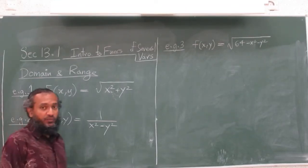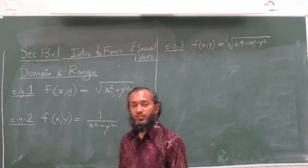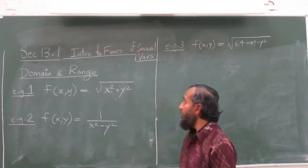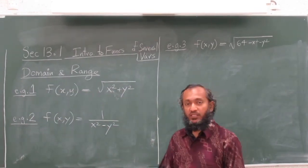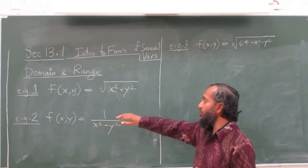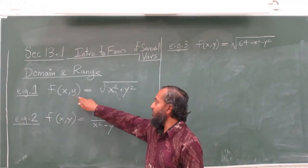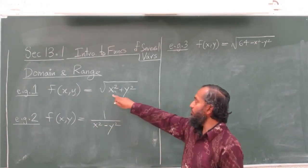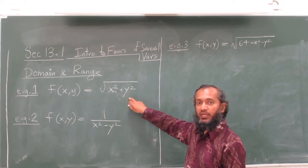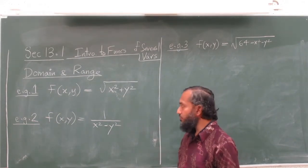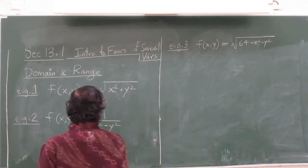Now we will talk about domain and range and graphing functions of several variables. Let's start with a few examples. We have f of xy equals square root of x squared plus y squared.